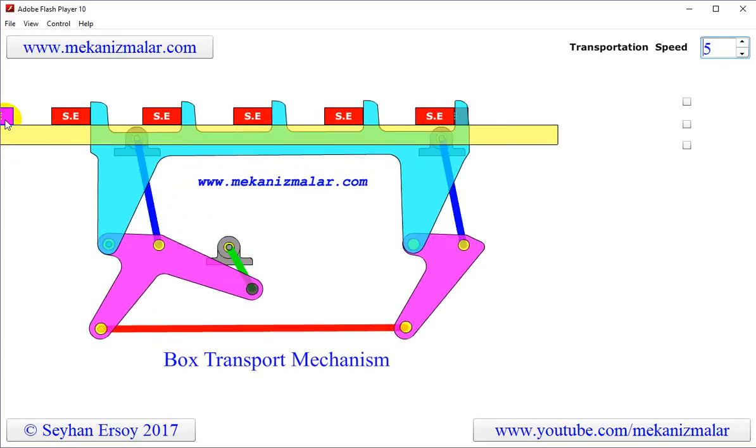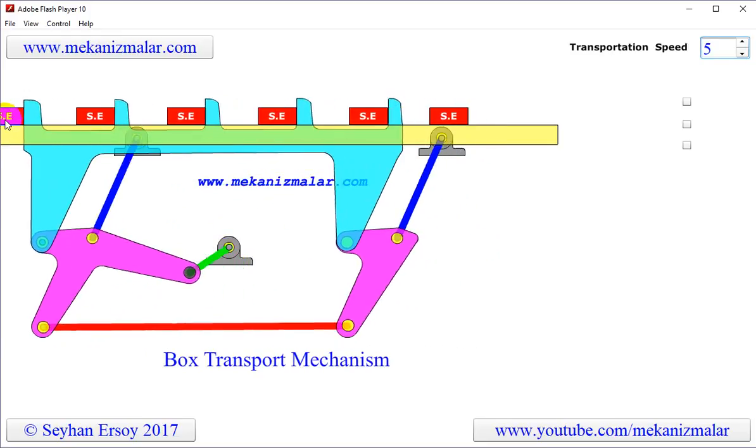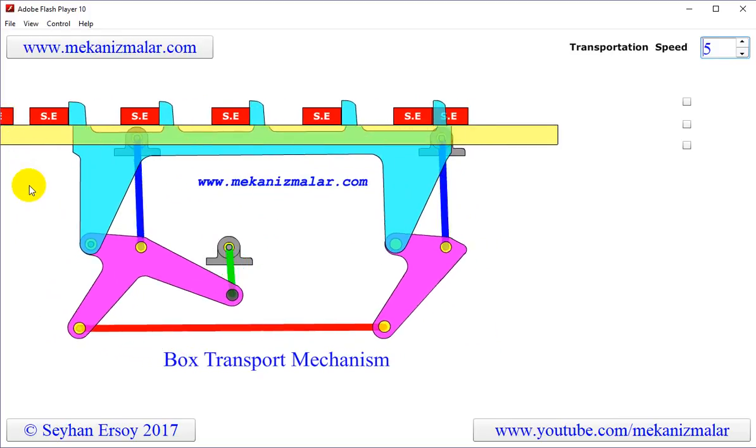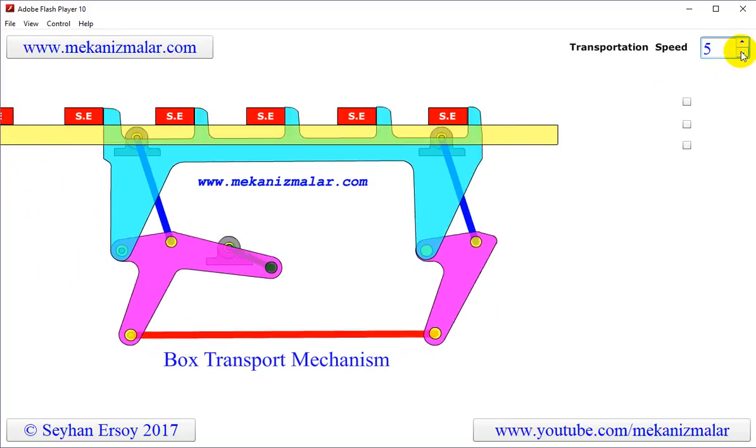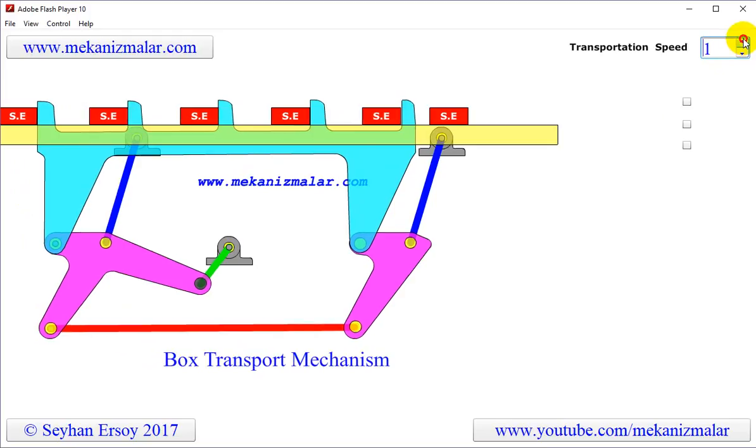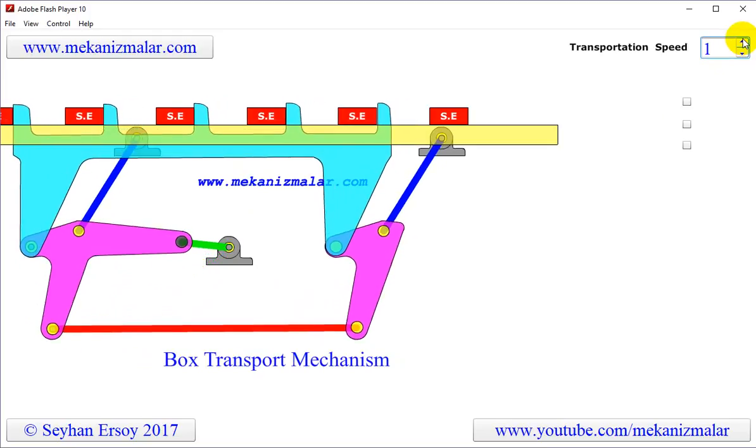Once these operations are completed, the box is pushed onto a shipping conveyor system. The speed of the operation is controlled by adjusting the speed of the motor powering the crank shown here.